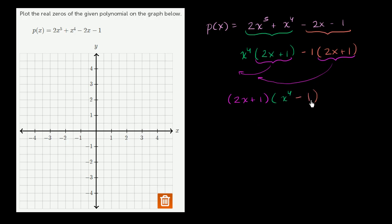And now this is exciting because this is much easier. 2x plus 1 is pretty easy to figure out when it equals 0. And this is pretty easy to factor. This is a difference of squares. This can be rewritten as x squared plus 1 times x squared minus 1. And of course we still have this 2x plus 1 out front.